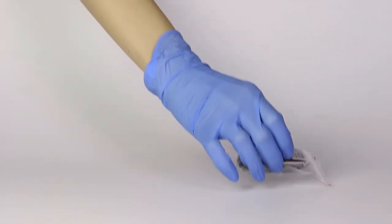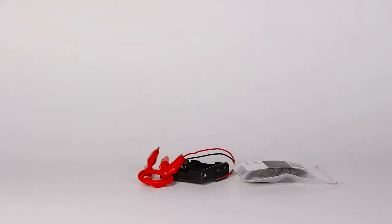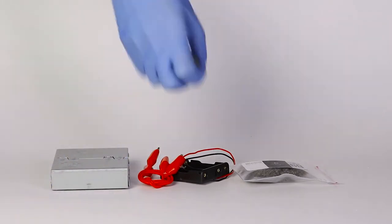For the steel wool experiment, you will need some steel wool, a battery holder, wires with crocodile clips, a stove, and four batteries.